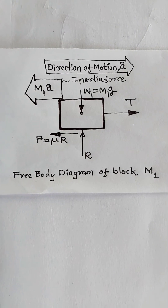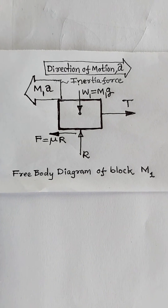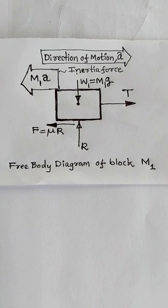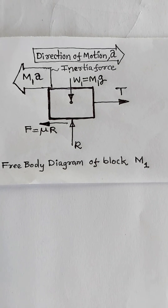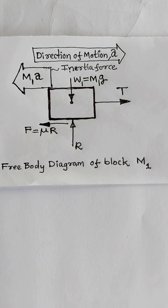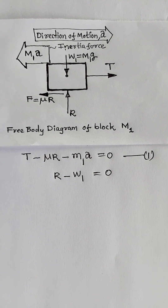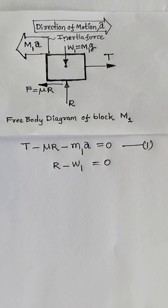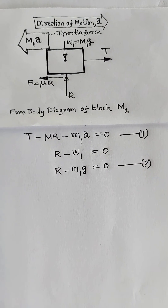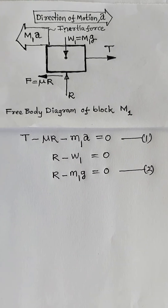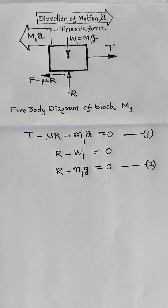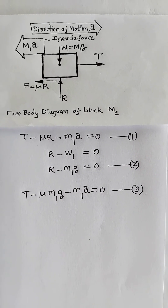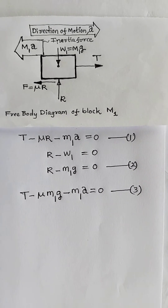Following the same free body diagram of block M1, when we apply the equilibrium equation perpendicular to the direction of motion, we get only two forces: normal reaction force R acting upward and weight force W1 acting downward, giving R minus W1 equals 0, or R minus M1G equals 0. Combining these two equations, we write the third equation: T minus mu·M1G minus M1A equals 0.